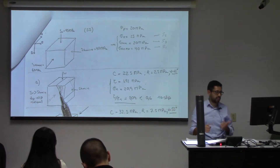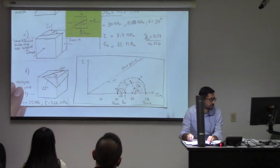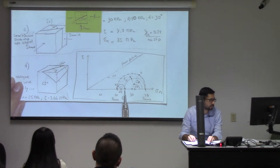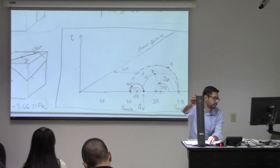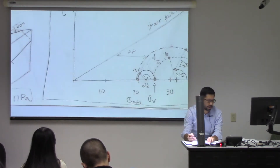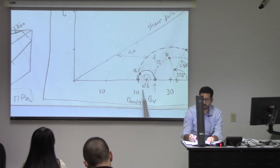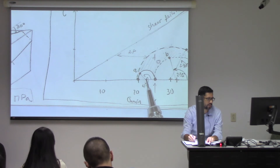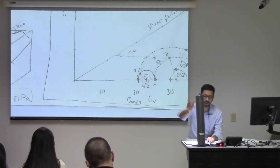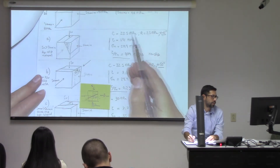We just need sigma V and sigma H min. You go to the Mohr circle: sigma V is 25, sigma H min is 20. The angle that you need is 65 times 2. That point over there is the fault that we were looking at. In order to calculate normal stress and shear stress, you just get the center of this circle and the radius of this circle.